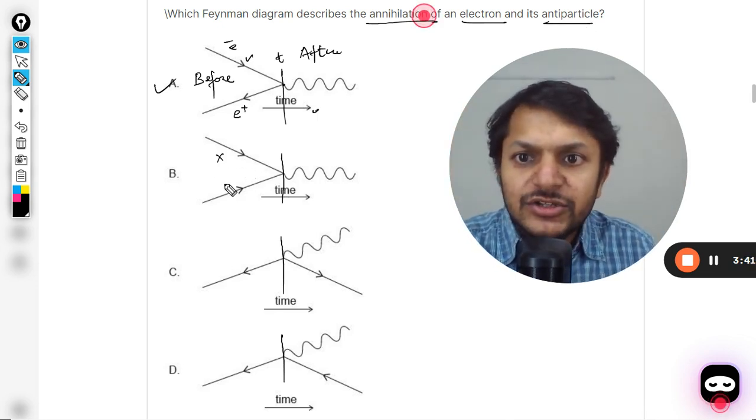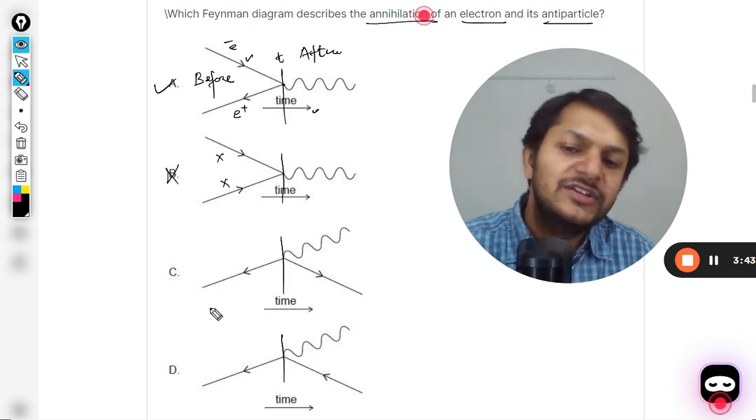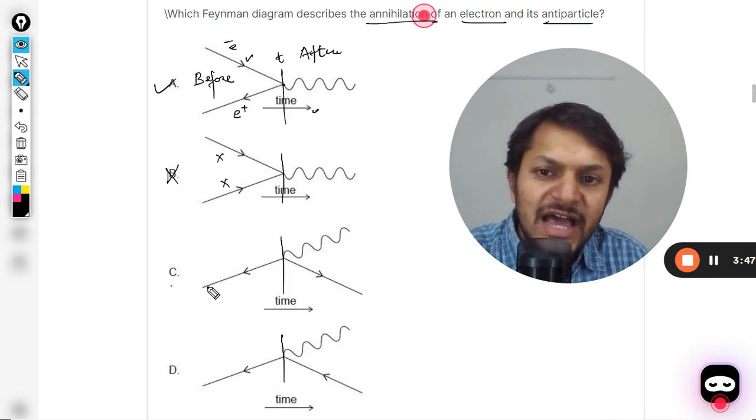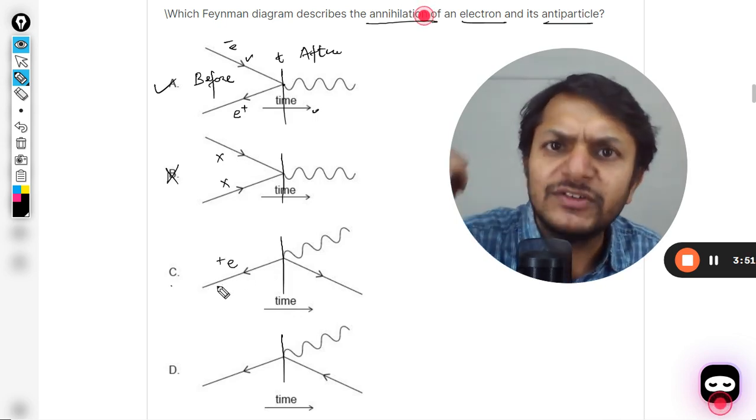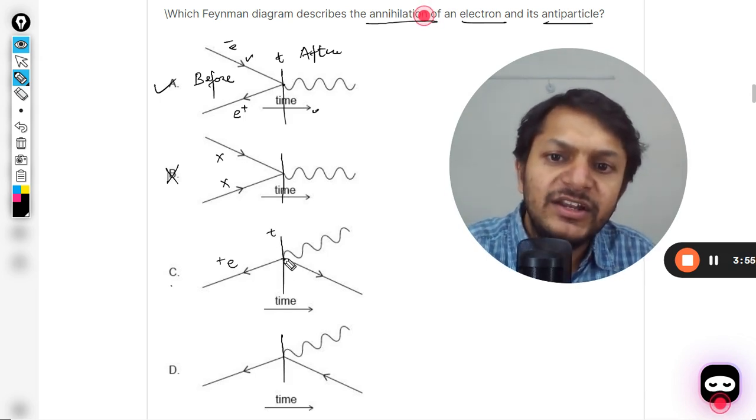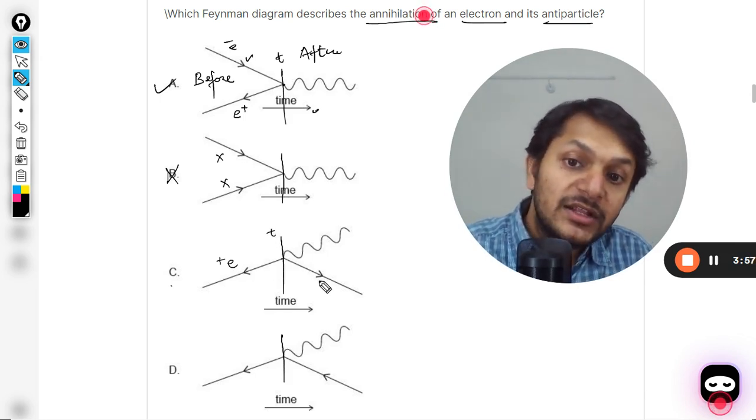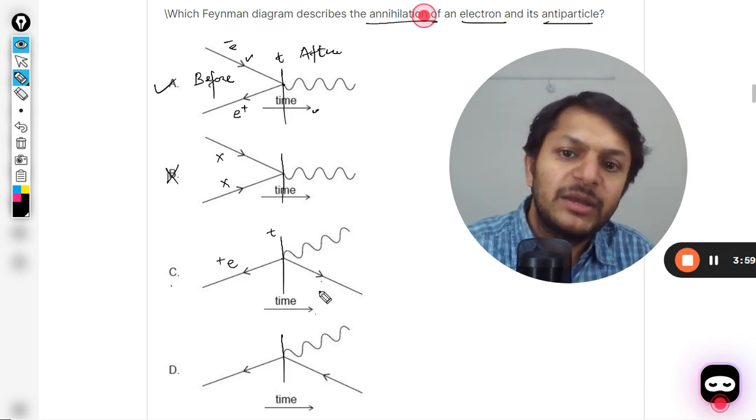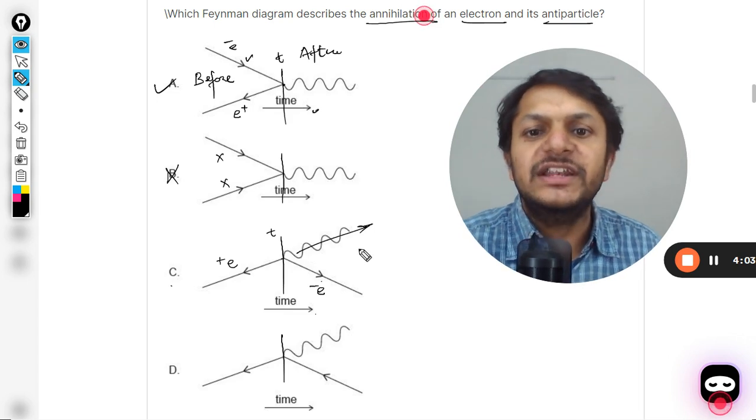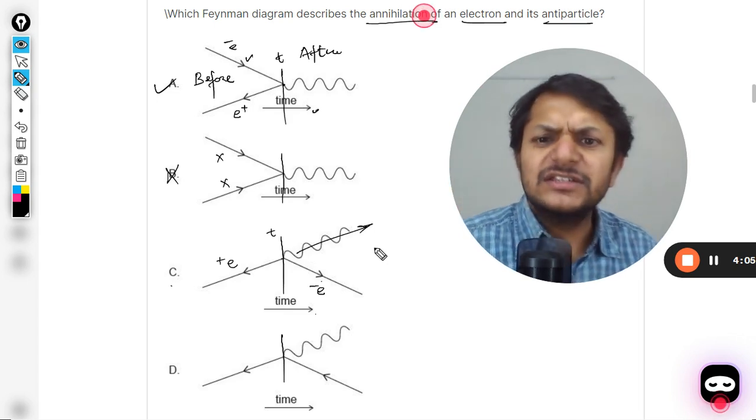What about C? See, the time is going in this direction, it means this is a kind of antiparticle, might be a positron. It is coming here and when it reaches this point, this direction and this direction is the same. It means it converts itself into electron and some photon is released. So this is a completely different reaction, this is not an annihilation.